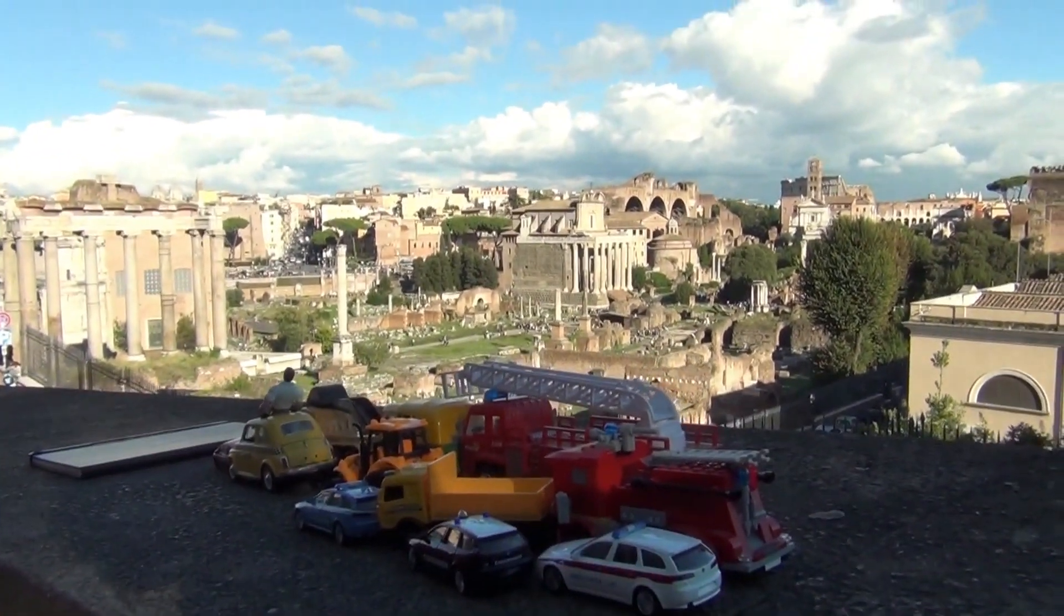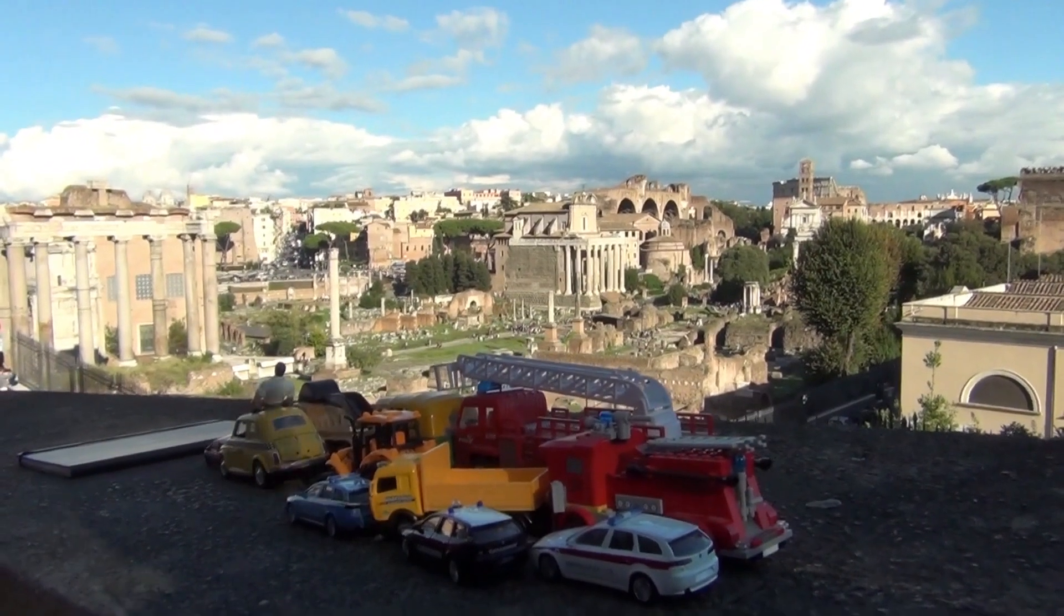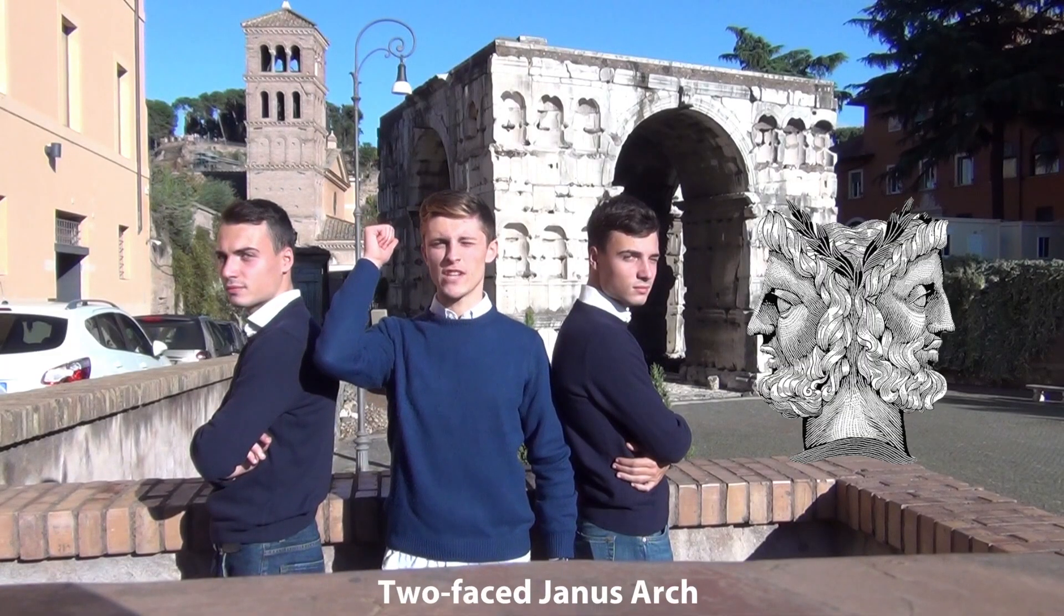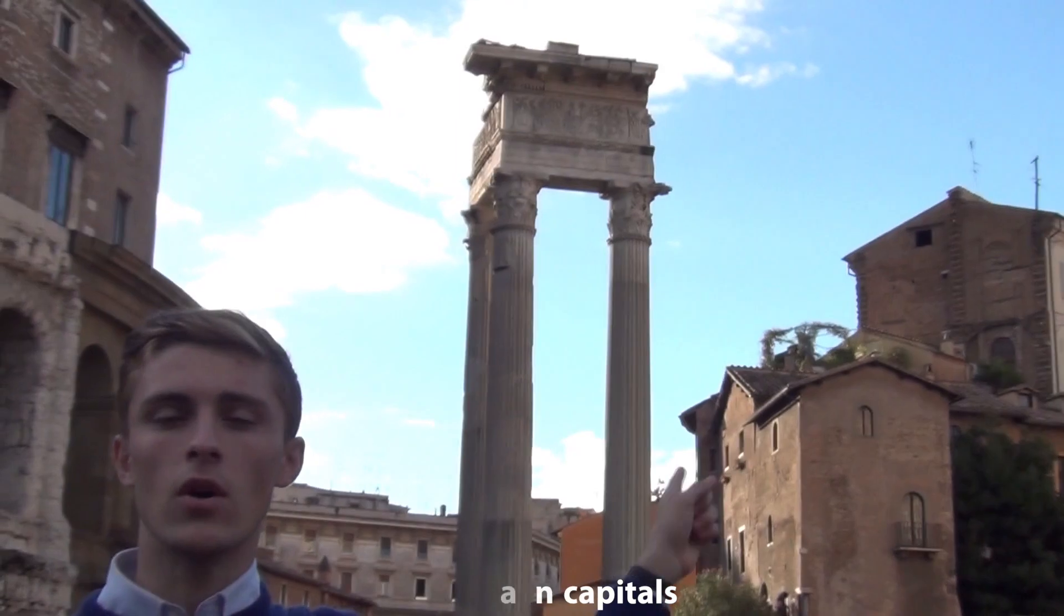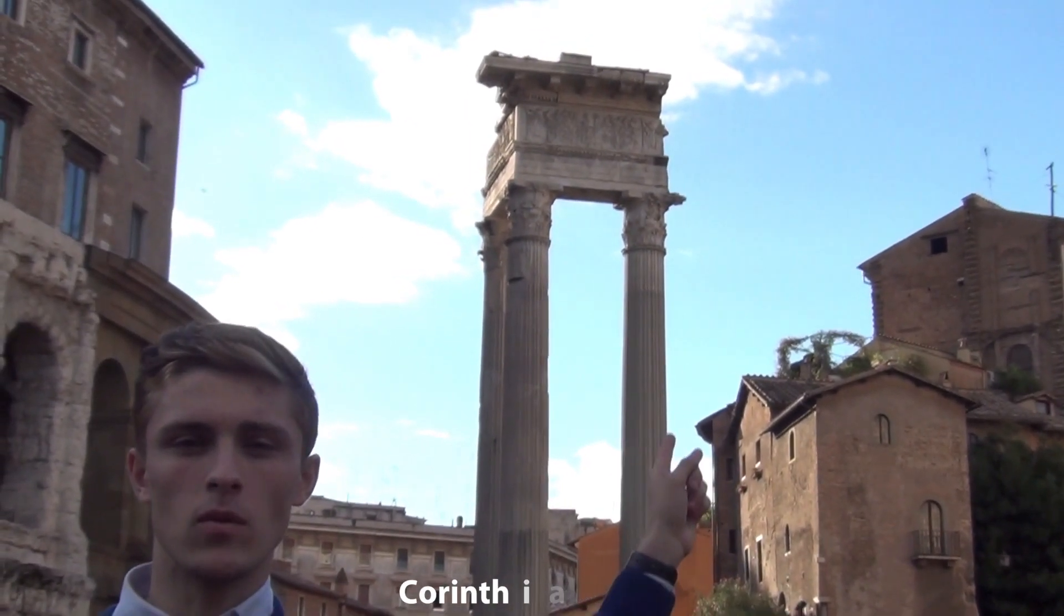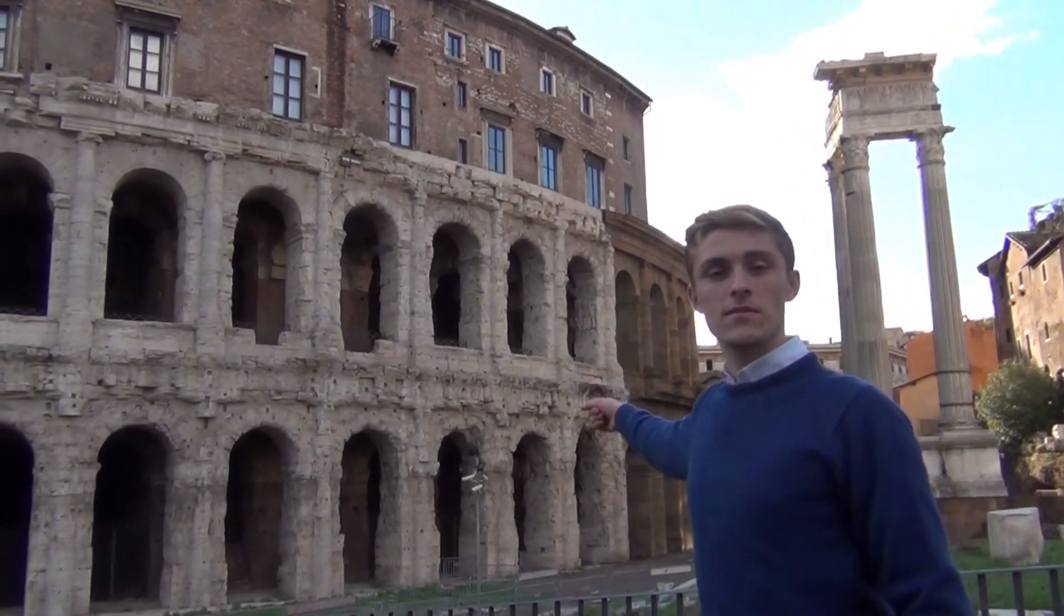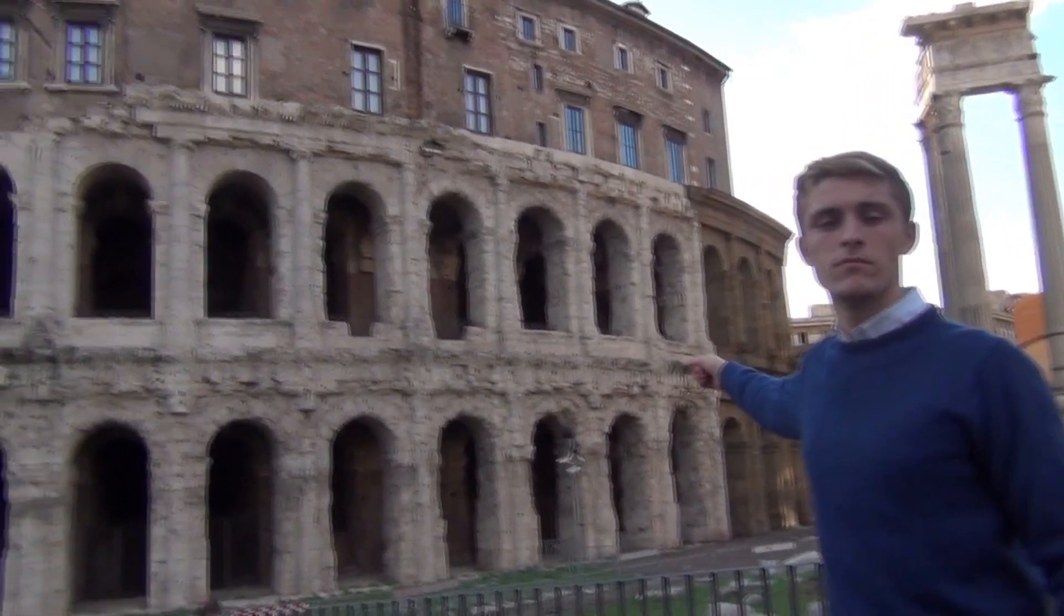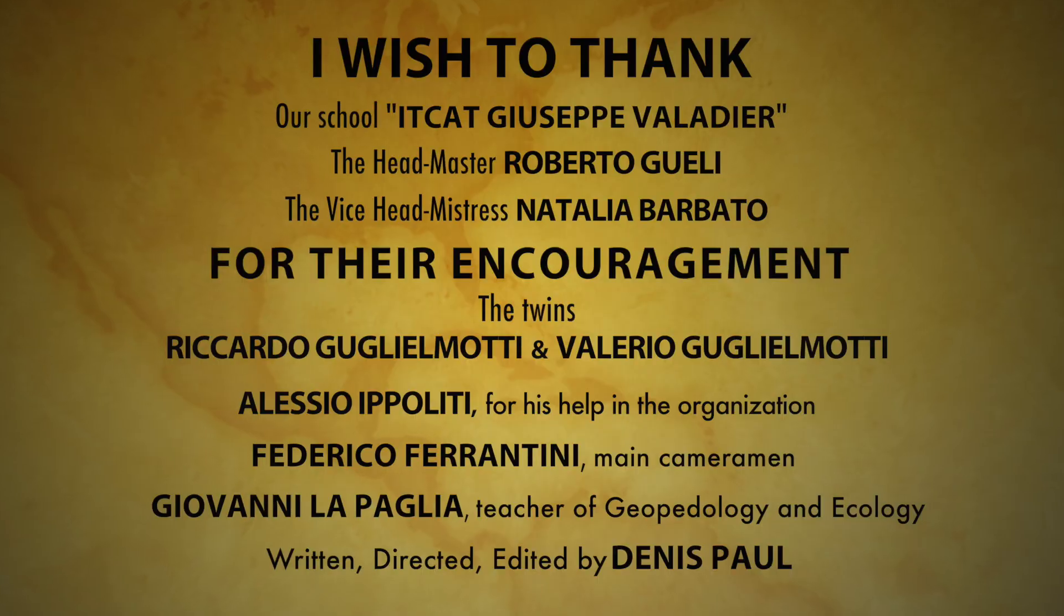This is the two-faced Janus arch. Those are Corinthian capitals. But this is not the Colosseum.